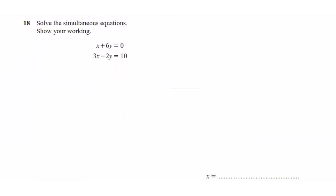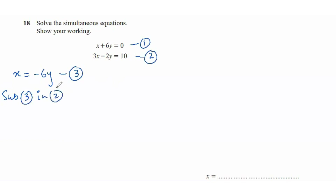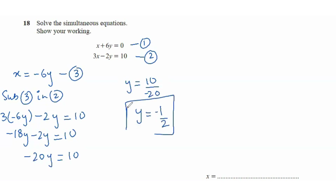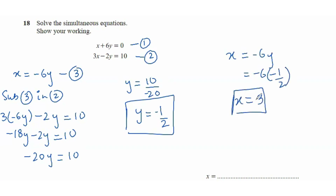Solve the simultaneous equations: x plus 6y equals 0, and 3x minus 2y equals 10. Make x the subject of the first equation: x equals negative 6y (equation 3). Substitute into equation 2: 3 times (negative 6y) minus 2y equals 10, giving negative 18y minus 2y equals 10, so negative 20y equals 10, and y equals negative 1/2. Then x equals negative 6 times (negative 1/2), which is 3. So x equals 3 and y equals negative 1/2.